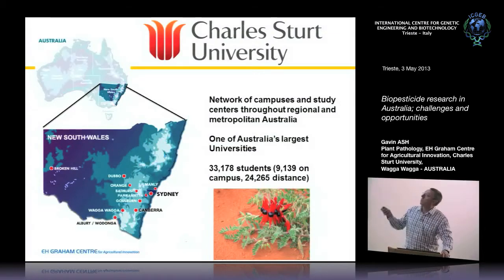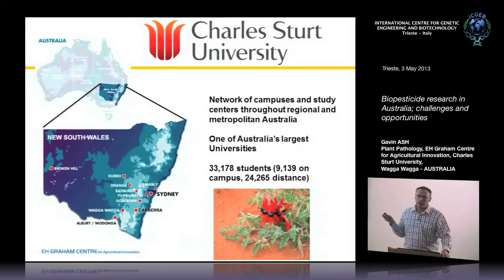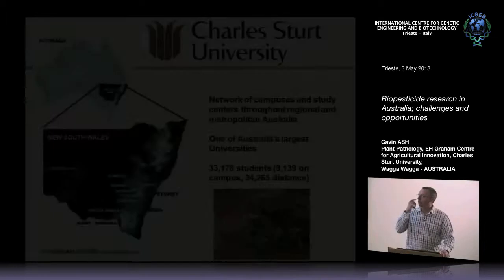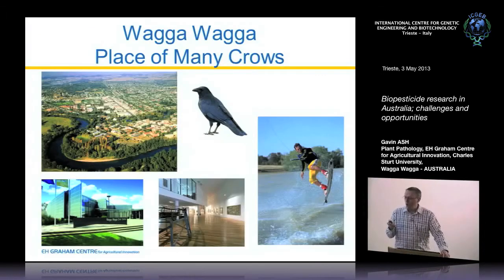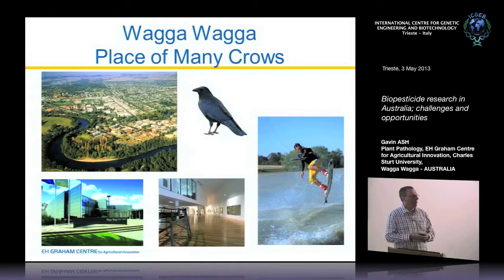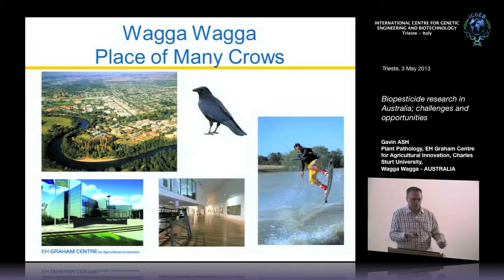You can see the flower reflects our crest as well. We're one of the largest universities in Australia by total student numbers, with over 33,000 students across all campuses. I'm at the Wagga Wagga campus — Wagga Wagga is an Aboriginal name. The Aboriginals have lived in Australia for over 40,000 years and were there long before we white people arrived.